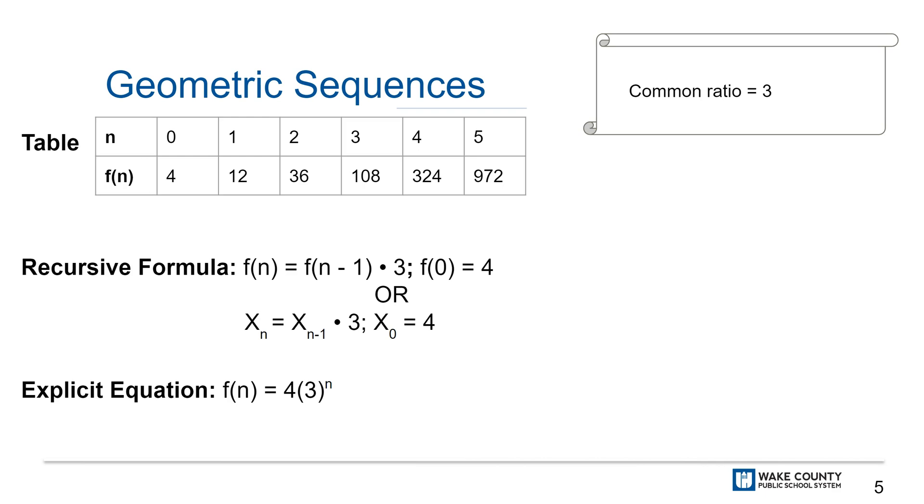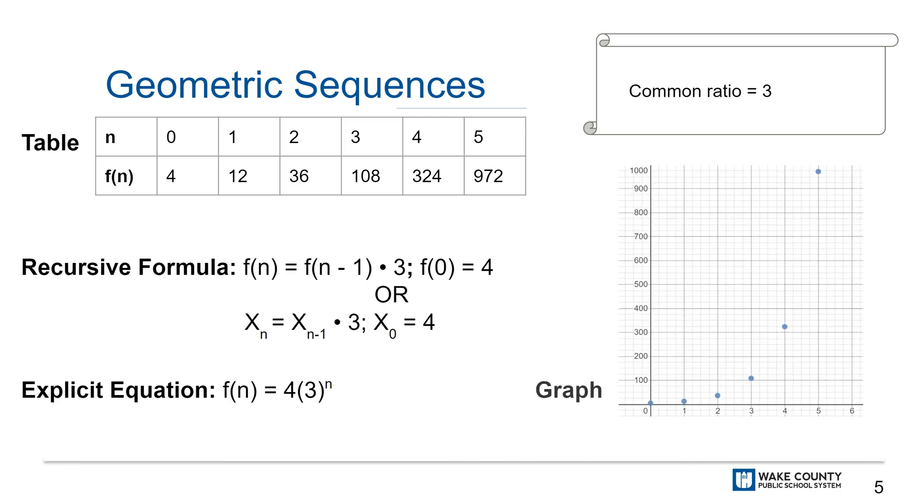An explicit equation for this geometric sequence would look like f(n) = 4 × 3^n. And a graph of this sequence would look like what you see here in the lower right of your screen.